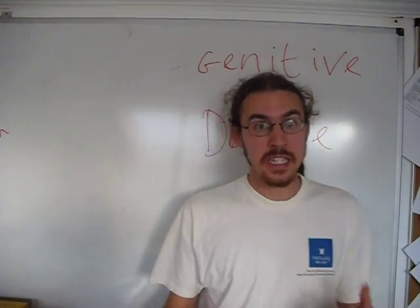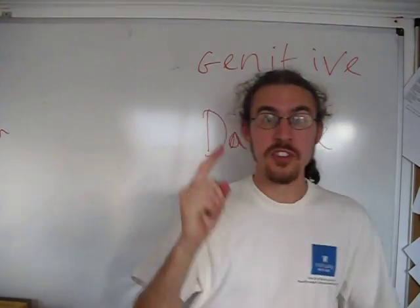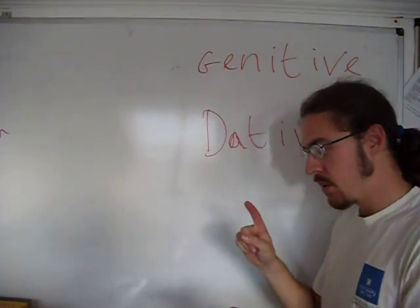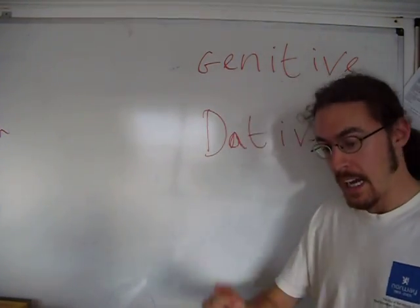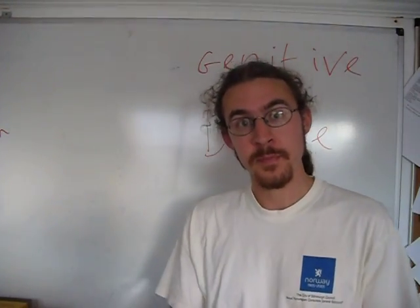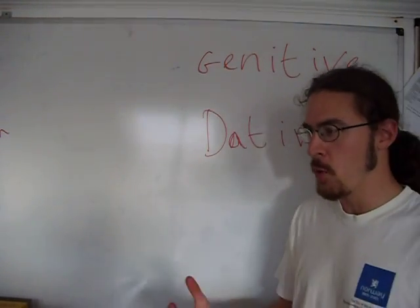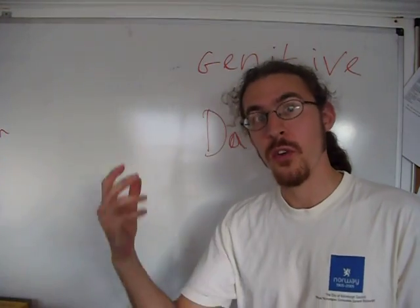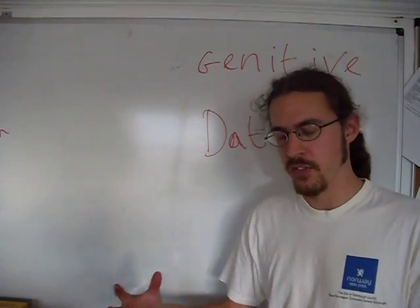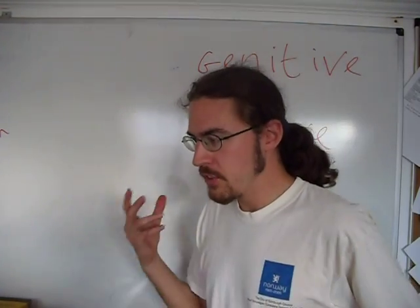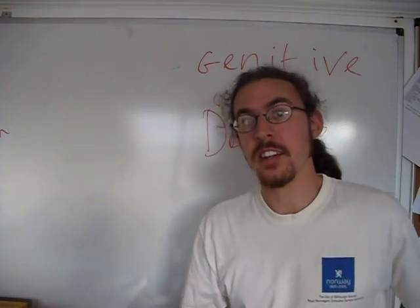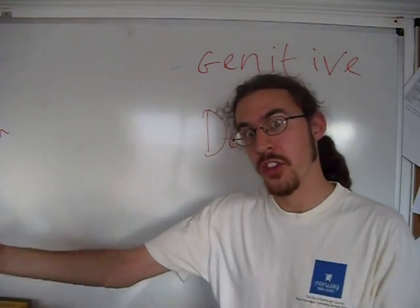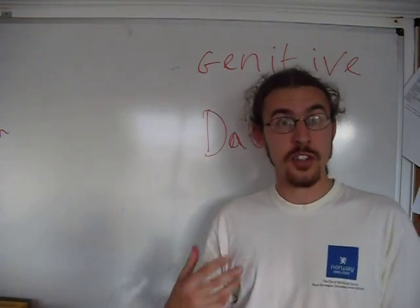So now you know a lot about how Old English nouns work, and in particular you know how the nominative works and the accusative. The nominative is the form that the subject of a sentence takes, the thing that does the verb. The accusative is the form that the object of the sentence takes, the thing that the verb is done to.